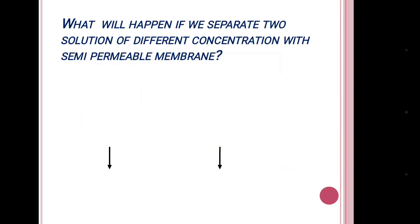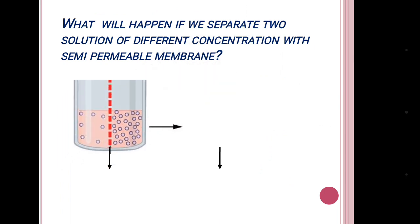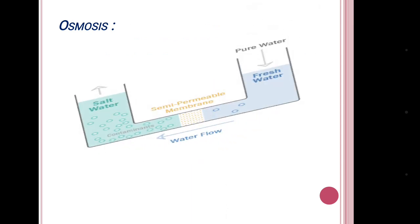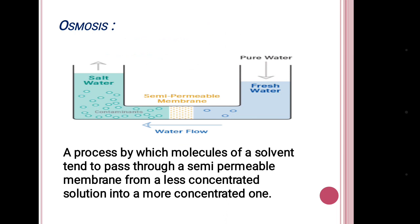Now, what will happen if we separate two solutions of different concentration with a semi-permeable membrane? The result will be the movement of solvent through the semi-permeable membrane from the low concentration region to the higher concentration region. So that is our topic today — osmosis. We can define osmosis as a process by which molecules of a solvent tend to pass through a semi-permeable membrane from a less concentrated solution into a more concentrated one.